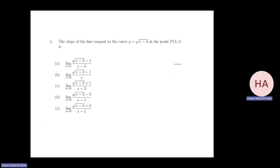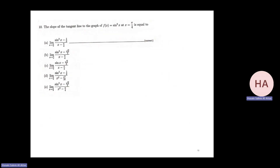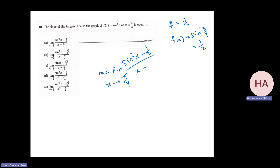The slope of the tangent line to this curve: A = π/4 and f(A) = 1. For f(x) = sin²x, f(π/4) = sin²(π/4) = (1/√2)² = 1/2. So the slope will be: limit as x→π/4 of [sin²x - 1/2] / (x - π/4).